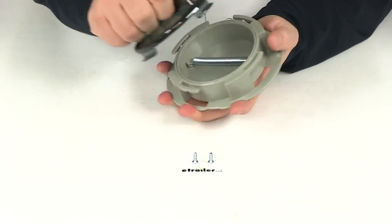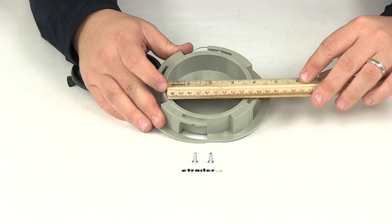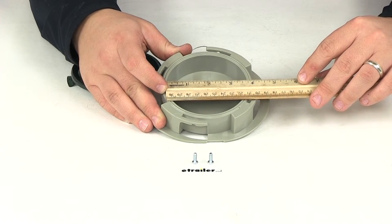If we take a measurement of the inside diameter of the holder, that's going to give us a measurement of three and three quarters of an inch.